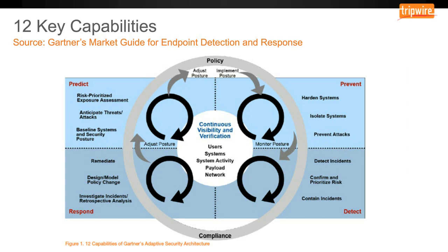Gartner presents a security lifecycle model originally for their EDR market that plays well into any security deployment. It's a whole life cycle: first you want to predict things — know what the attack is going to be and prevent it. That leads to prevention, hardening your systems continually as new things come out. Prevention leads into detection — detect things as they happen. Since you won't detect everything, you need to be able to respond. All of this intelligence keeps feeding into itself, creating a huge life cycle of protection against everything.